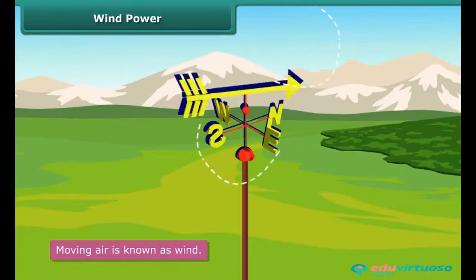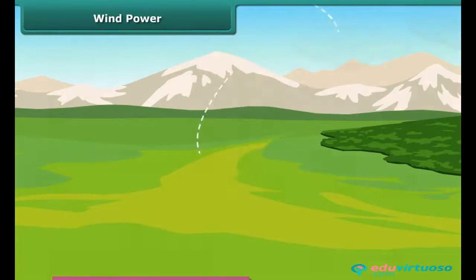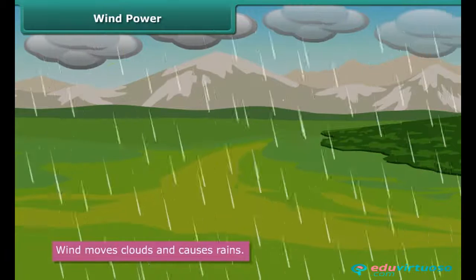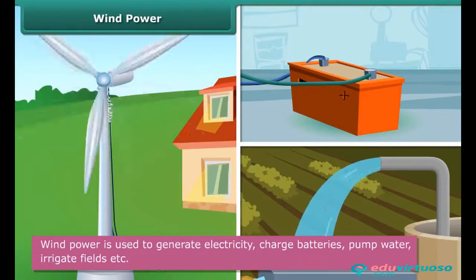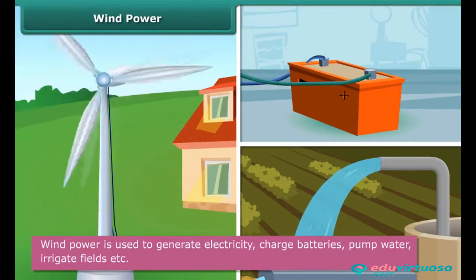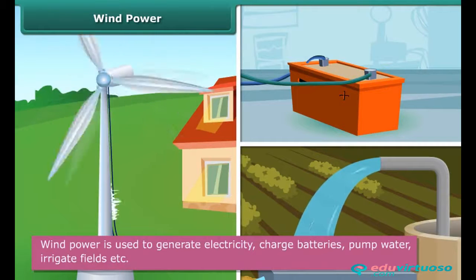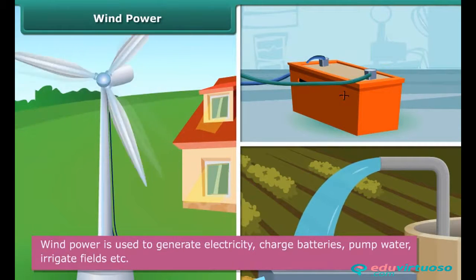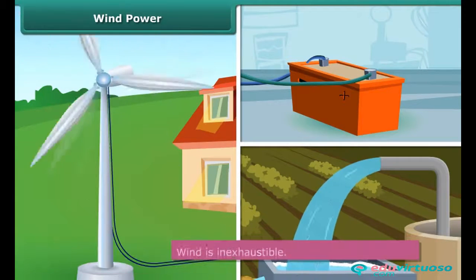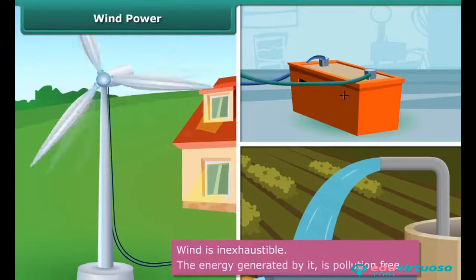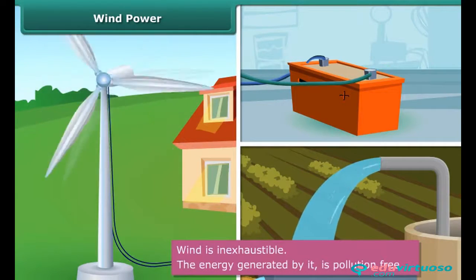Moving air is known as wind. Wind moves clouds and causes rain to be distributed evenly over the earth. Wind power is used to generate electricity, charge batteries, pump water, and irrigate fields. The biggest advantage of using wind power is that wind is an inexhaustible resource and the energy generated is pollution free.